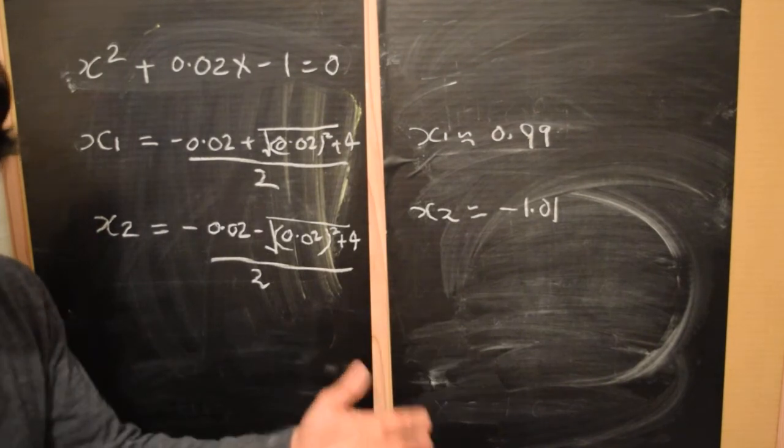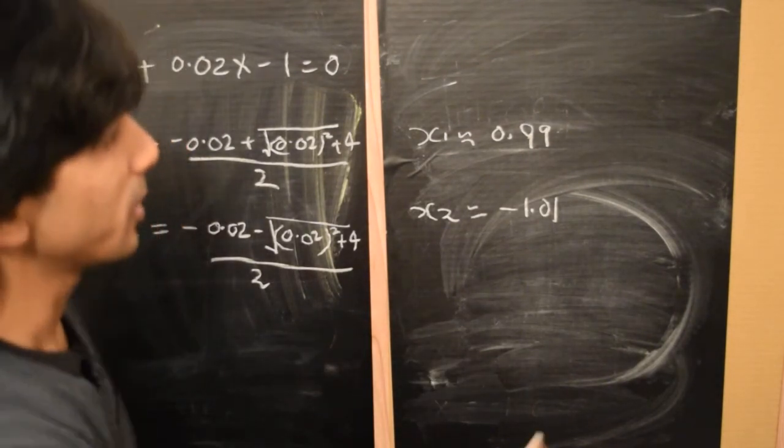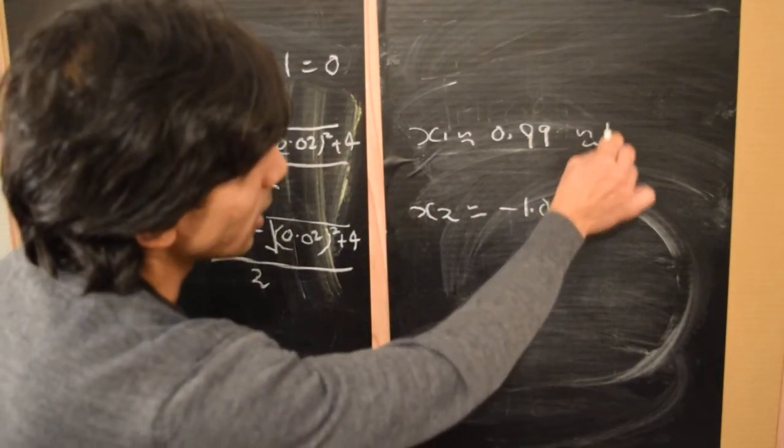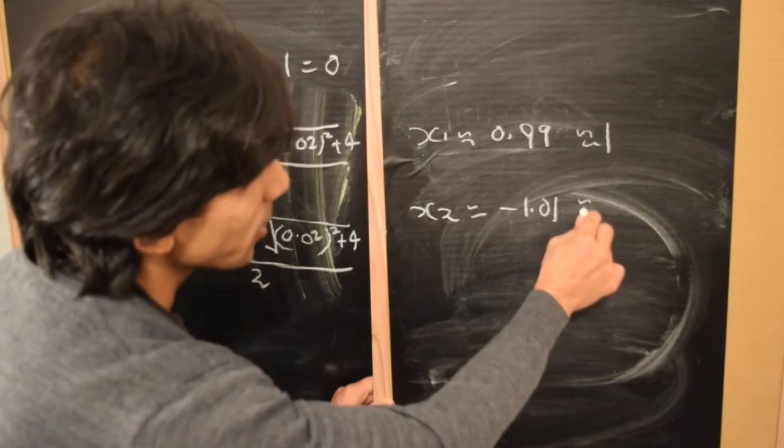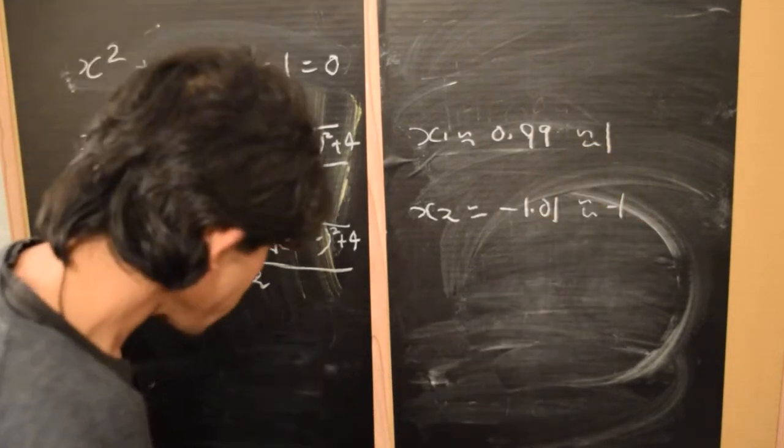Now if you ask most people what is 0.99, they'll tell you that 0.99 is approximately 1, and minus 1.01 is approximately minus 1.